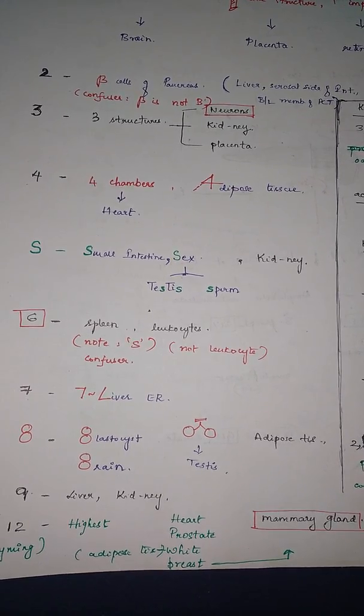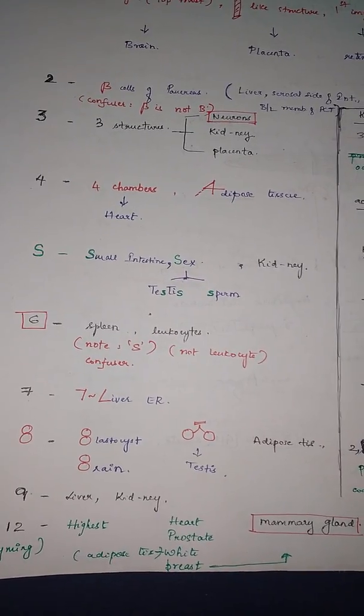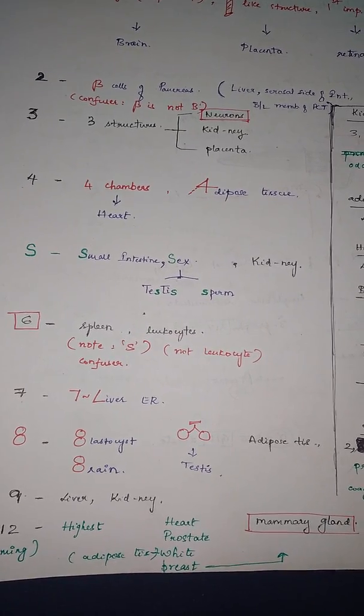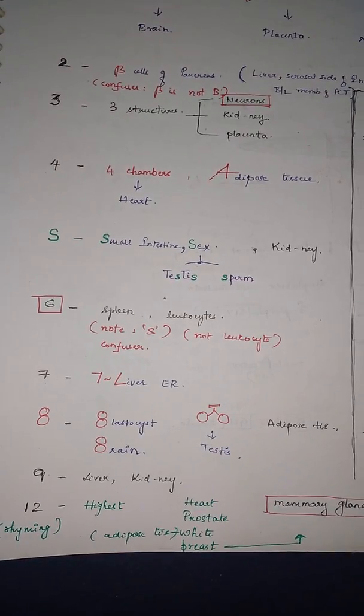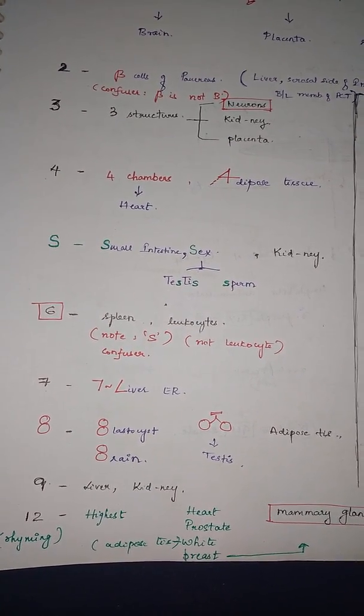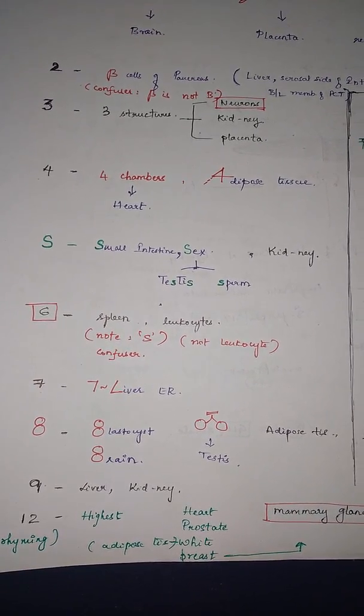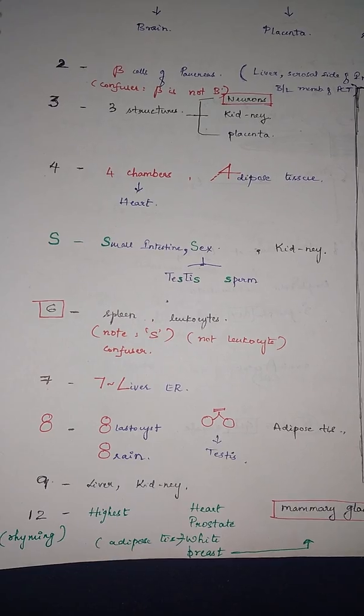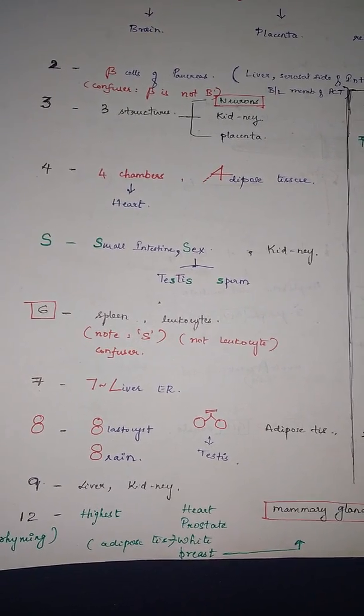And eight, we have blastocyst, brain, testes, and adipose tissue. Nine is by heart, so it is liver and kidney. So if you can see, 3, 6, and 9 are the by-heart GLUTs, so I have written them in black.